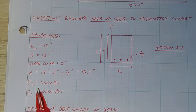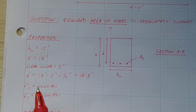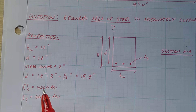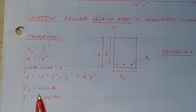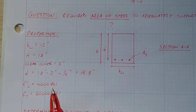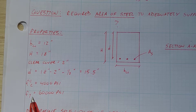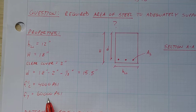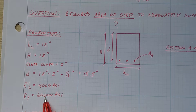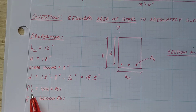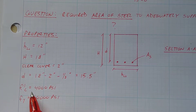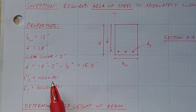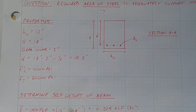Next we have f'c, the compressive stress of our concrete, which is 4,000 psi (or 4 ksi) as given. And fy, the yielding stress of the steel, is 60,000 psi (or 60 ksi) — that's the most common rebar yield stress nowadays. Concrete compressive strength typically ranges between 4,000 and 5,000 psi, though you can go up to 8,000 psi for high-strength concrete. In this case: f'c = 4,000 psi and fy = 60,000 psi.